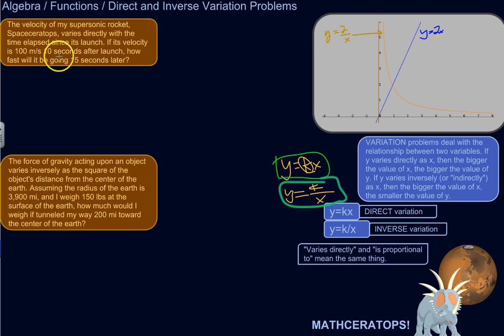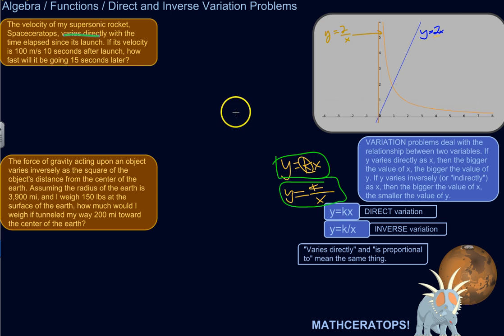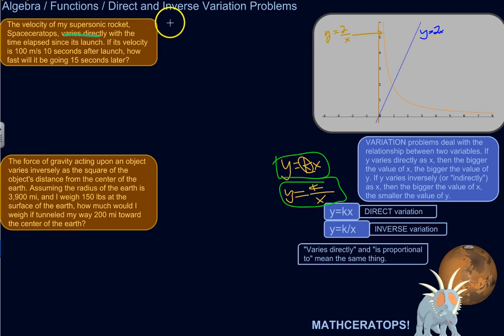Let's try this on two examples. The velocity of my supersonic rocket, Space Ceratops, varies directly with the time elapsed since its launch. It's a direct variation, so we set it up like this: let's say v equals some constant k times the time elapsed, t.